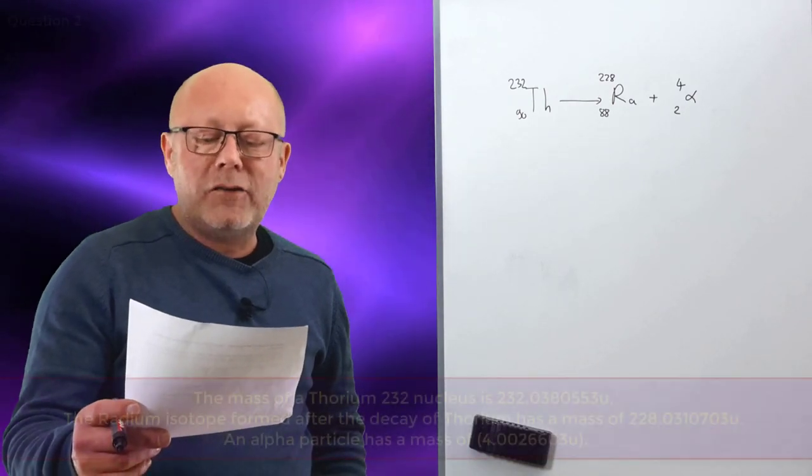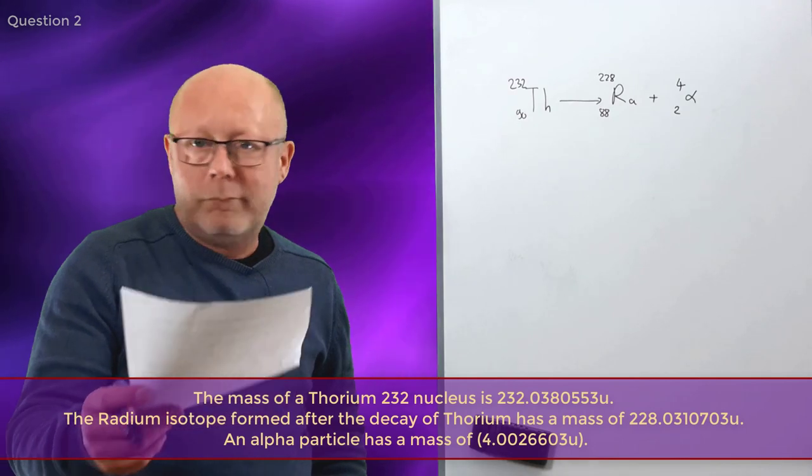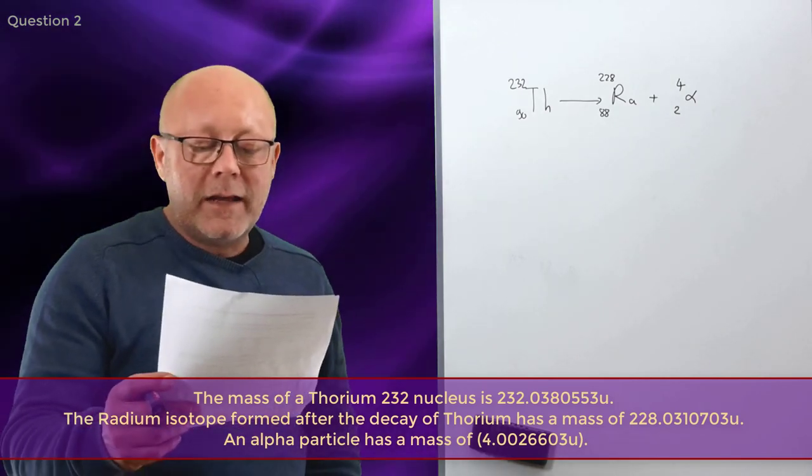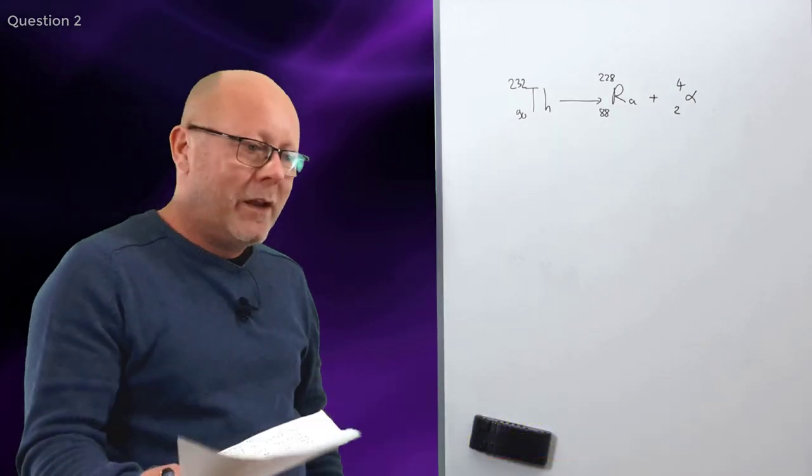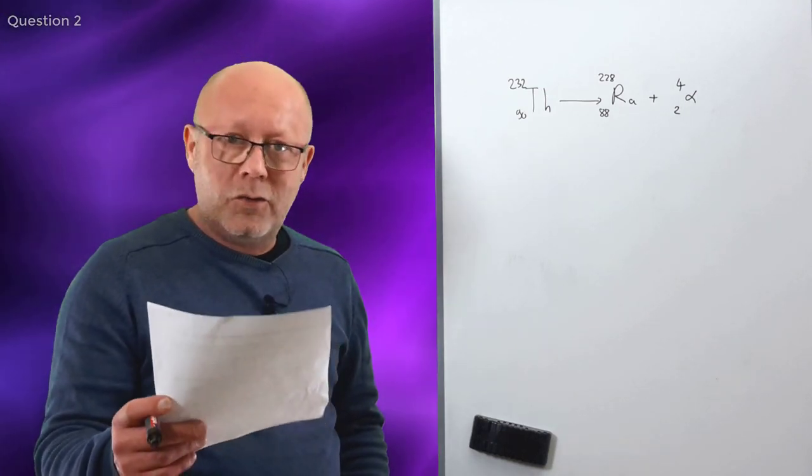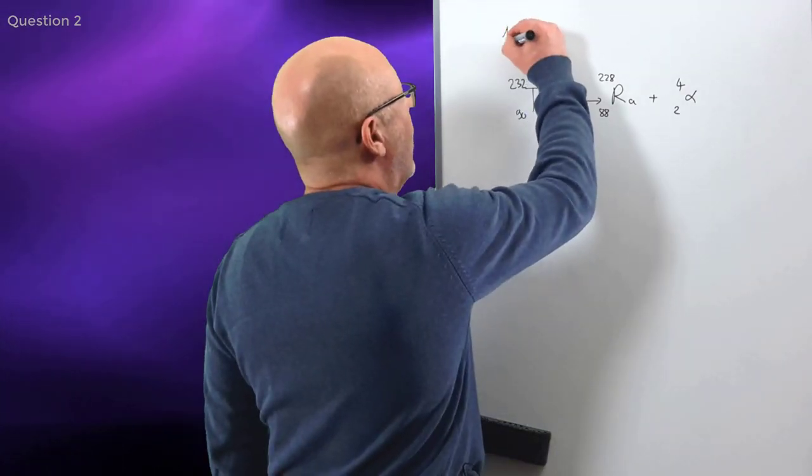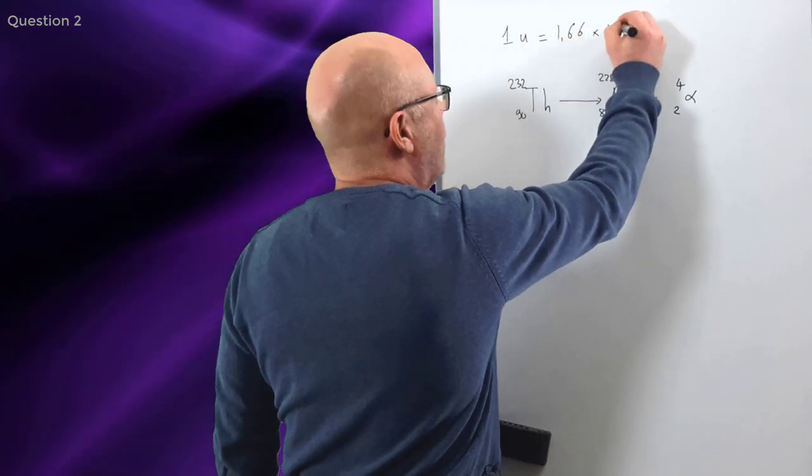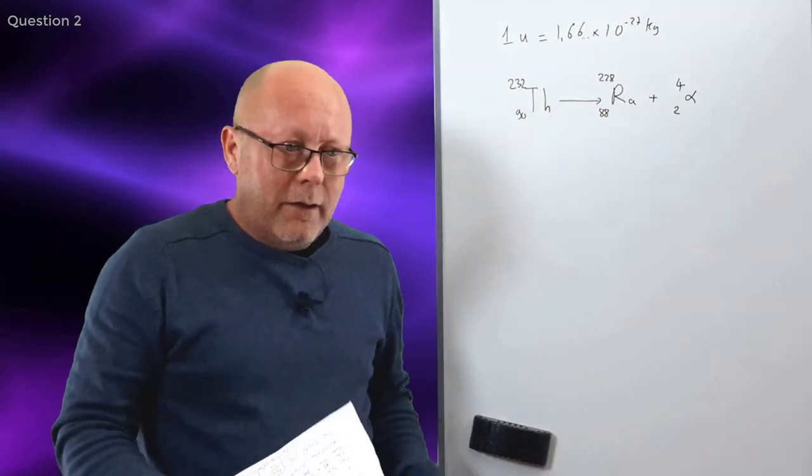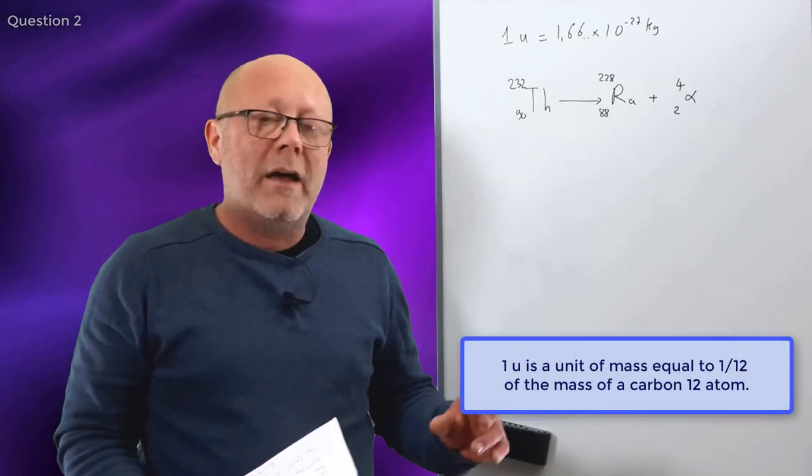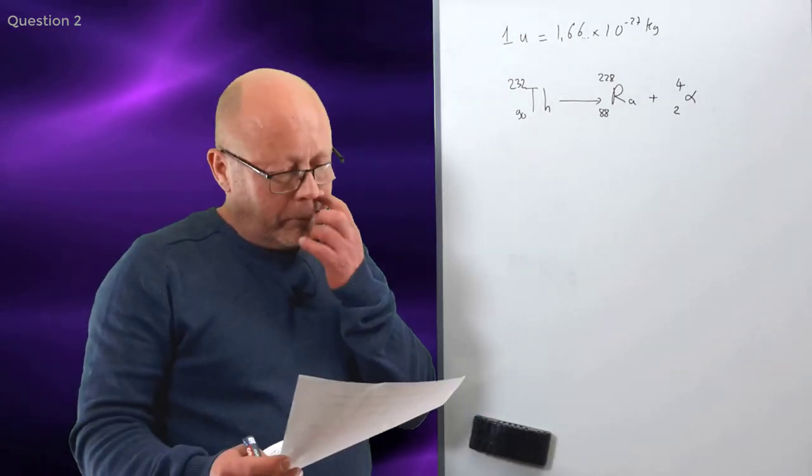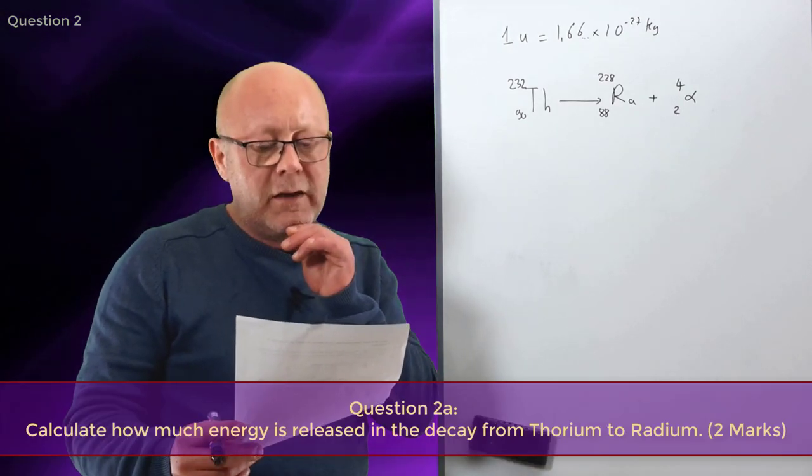Question two. The mass of a thorium 232 nucleus is 232 point blah blah. The radium isotope formed after the decay has a mass of 228 point blah blah. An alpha particle has a mass of 4 point blah blah. Yeah, I'm using blah blah because I'm too lazy to say decimals. There are many of them, but they're important. So, you can find them in the text. What's also important is that the unit of mass used is the unified atomic mass unit, 1U, which is 1.66 by 10 to the minus 27 kilograms. How much energy is released in the decay from thorium to radium?